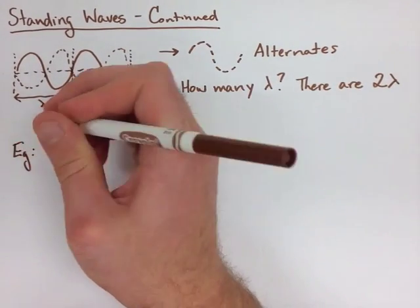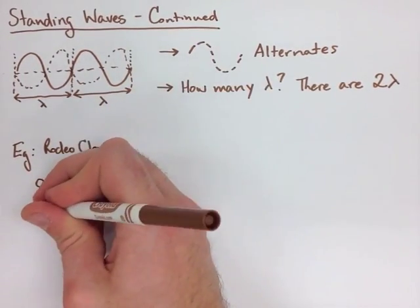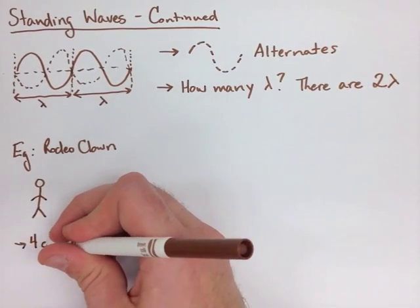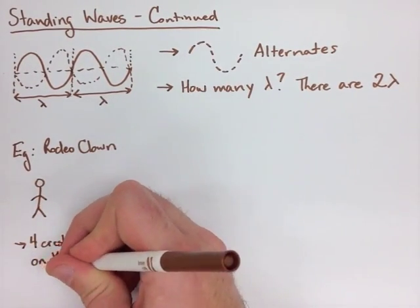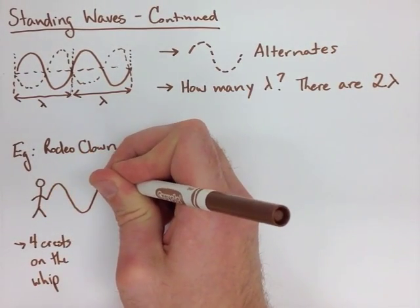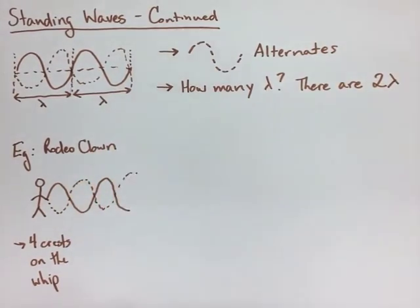Let's look at the example where we have a kid watching a clown crack a whip. This one's a little bit harder, because we don't have a fixed end here. The kid sees four crests when she's looking at this whip. If we draw that, we've got one, two, three. And now we flip it over, and that's our fourth there.